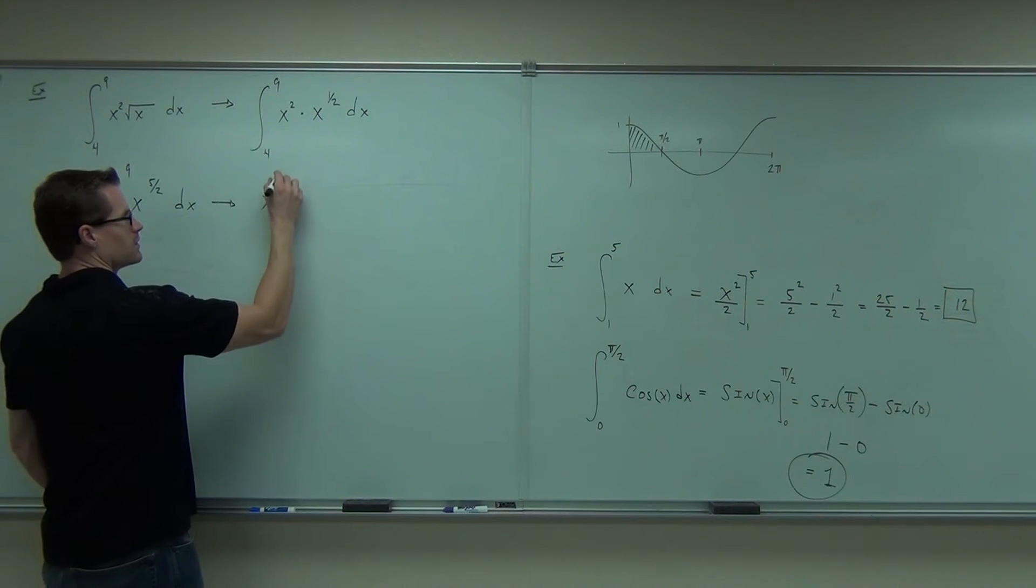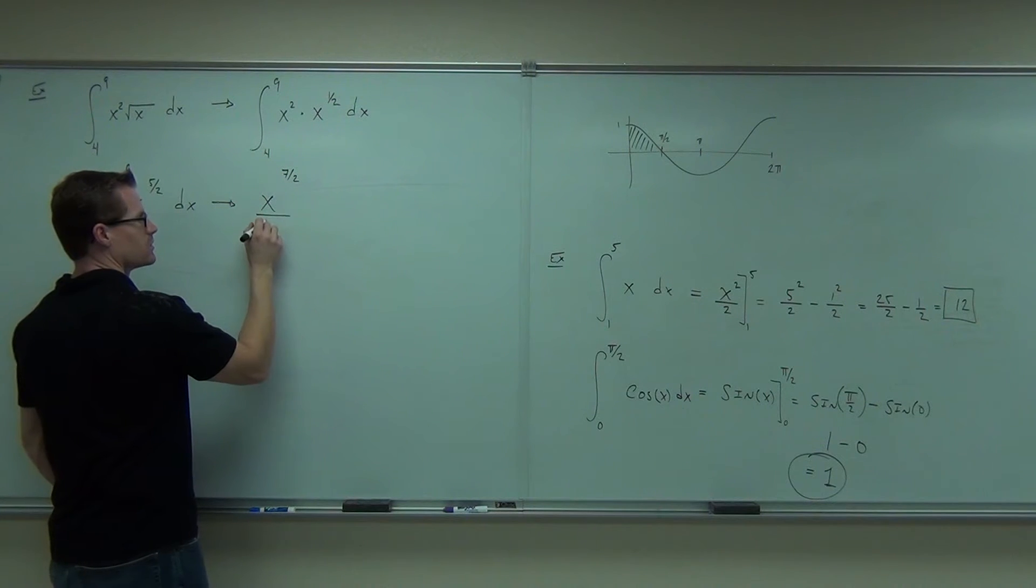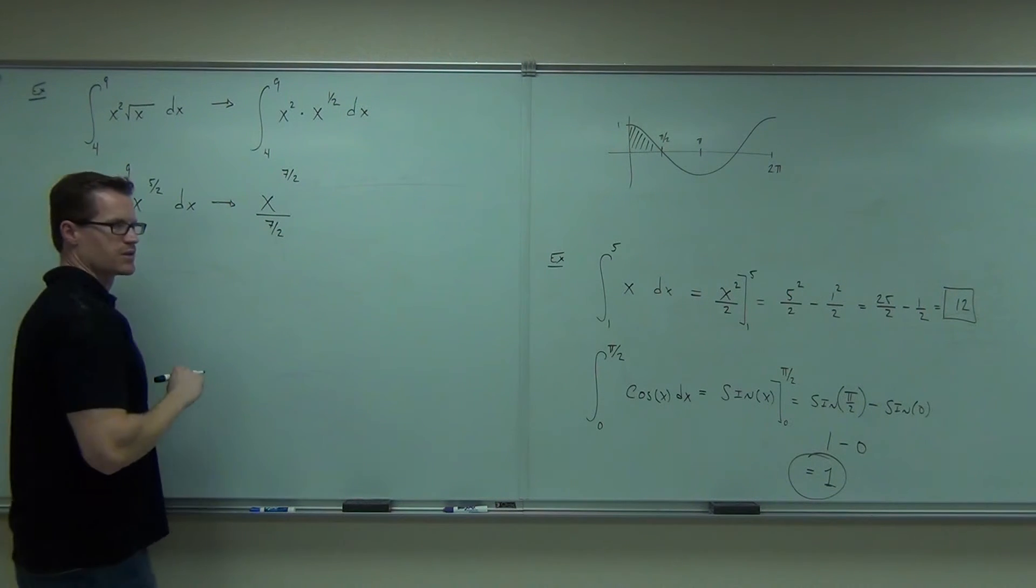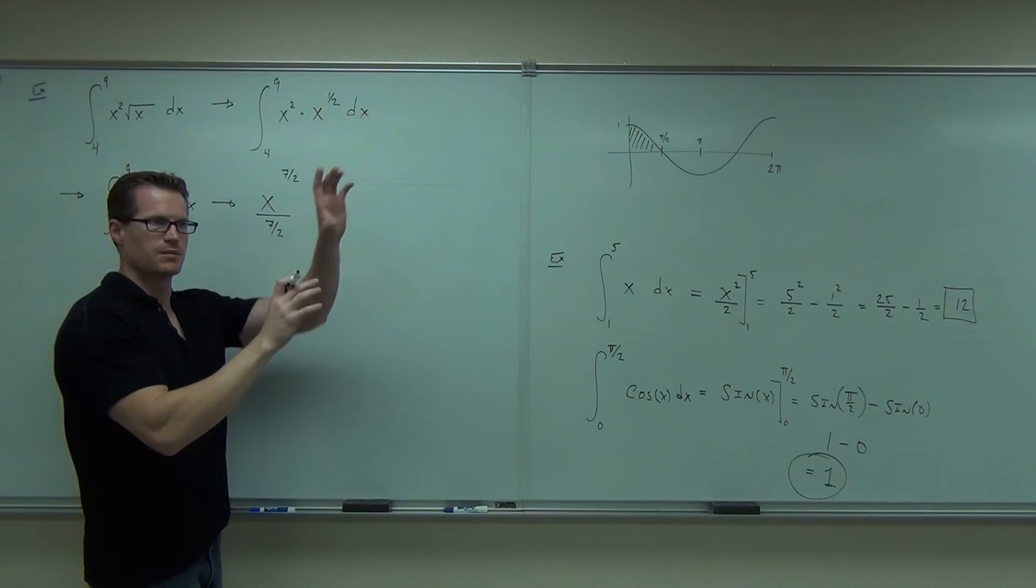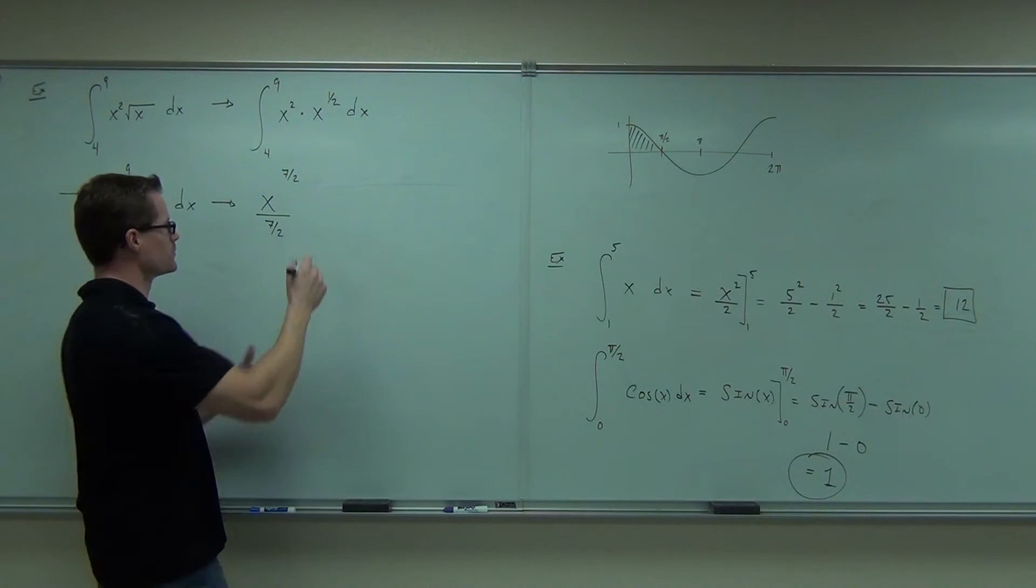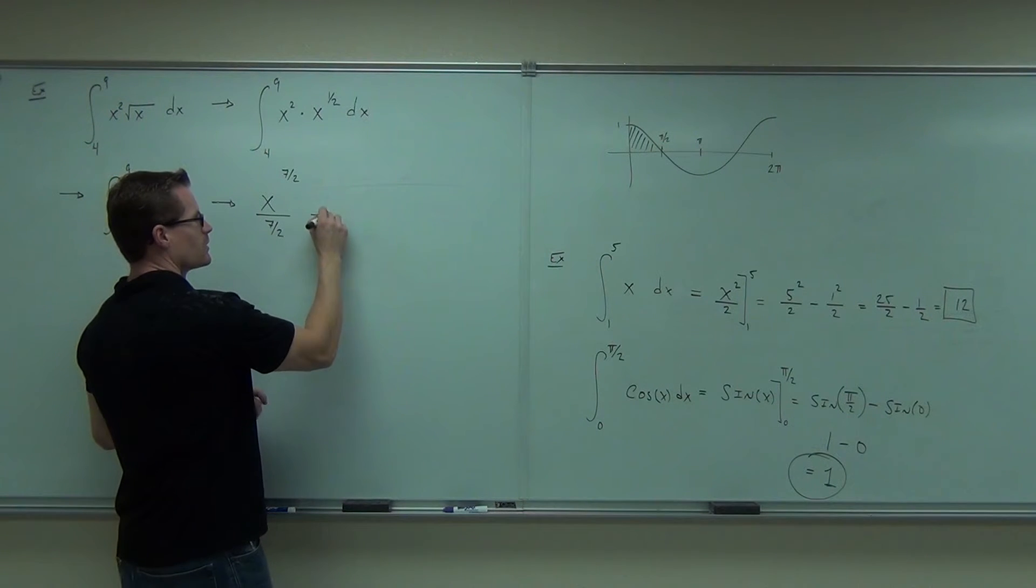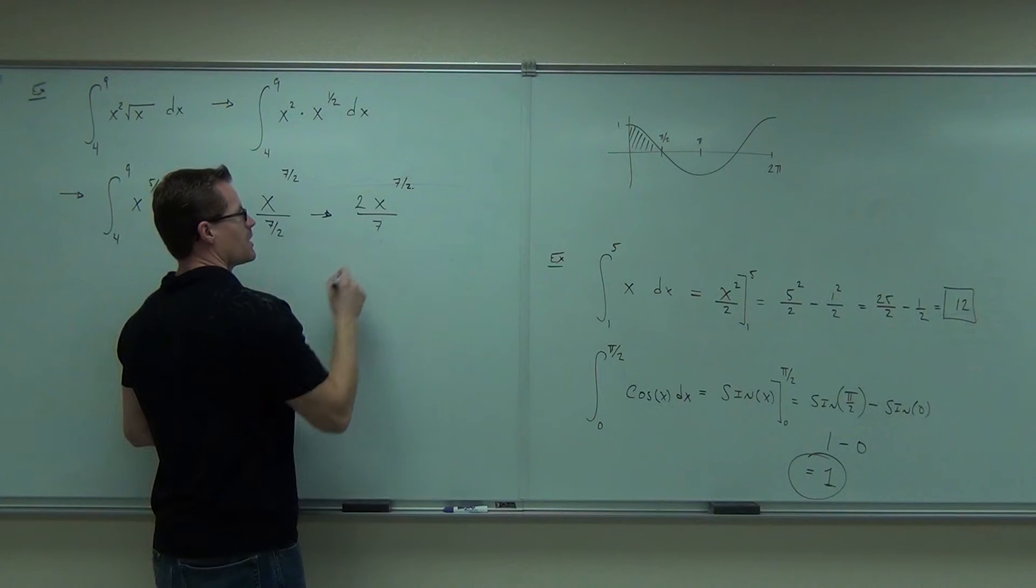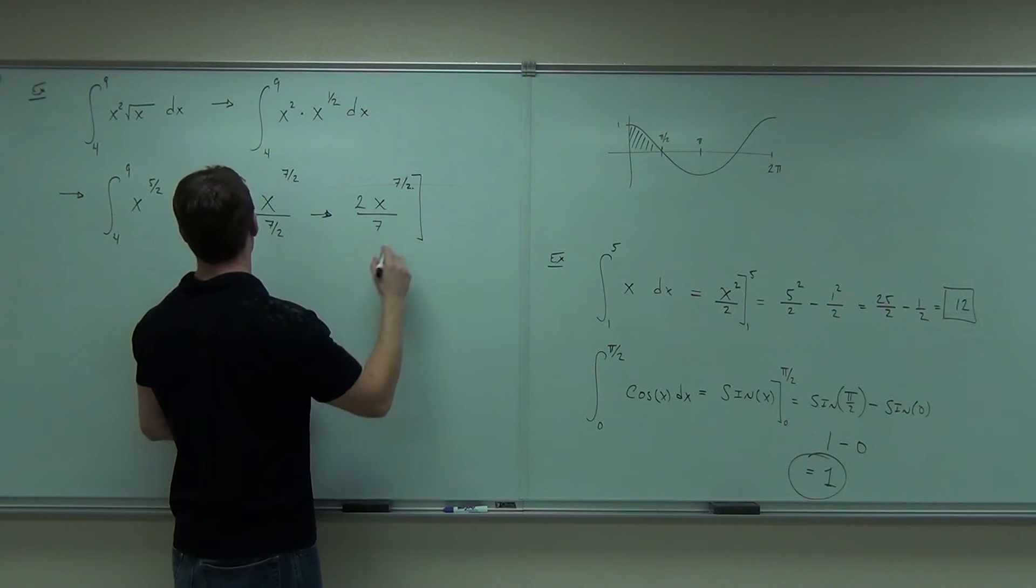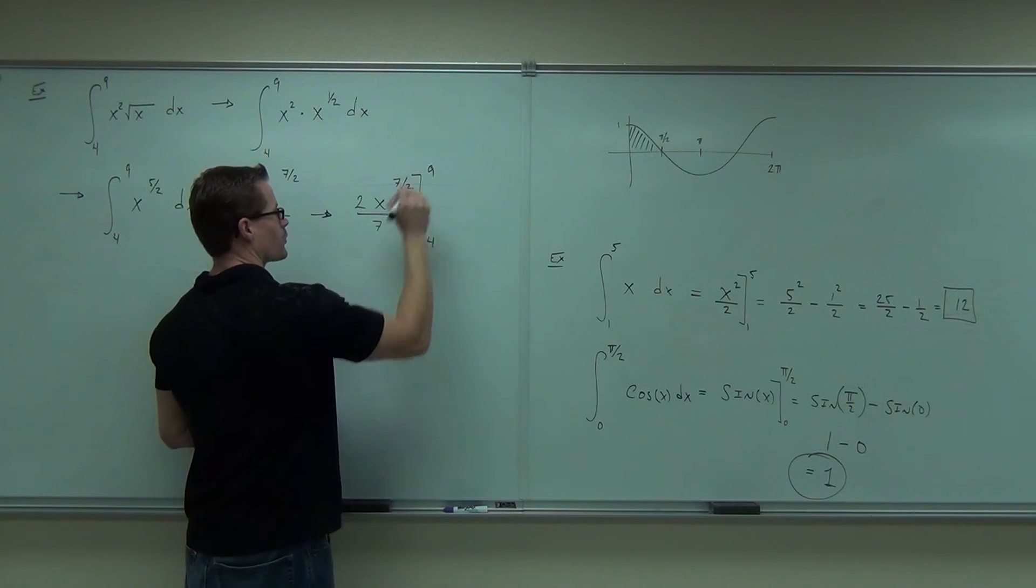x to the 5/2. Can you take an integral of x to the 5/2? Very easily. This would be x to the 7/2 over 7/2 over the same exact variable. Make it a little bit prettier here. We're gonna have 2x to the 7/2 over 7, and then we get to evaluate from 4 to 9.